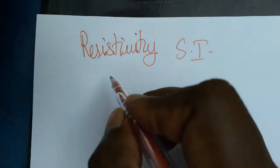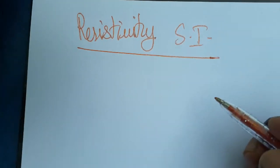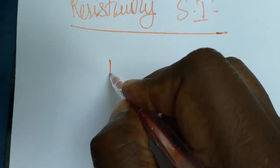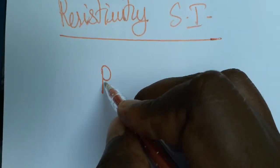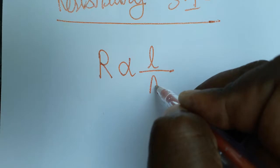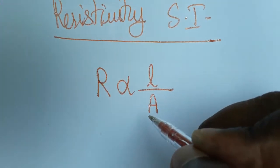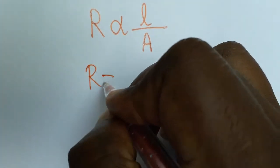Hello students, in this video we are going to learn what is the unit of resistivity. Before learning resistivity, you need to know the resistance affecting factors. Resistance is directly proportional to the length and inversely proportional to the area.